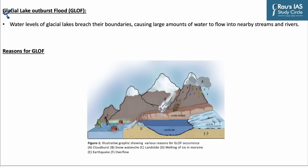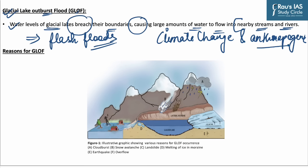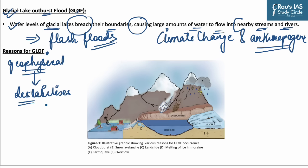Now let us see what glacial lake outburst floods are. It is the term used to describe the incident when water levels of glacial lakes breach their boundaries, causing large amounts of water to flow into nearby streams and rivers, creating flash flood situations. Glacial lake outburst floods are often attributed to climate change and increased anthropogenic footprints on glaciers. The possible reasons are any geophysical phenomenon that destabilizes the water level in a glacial lake, subsequently resulting in breach of water boundaries.